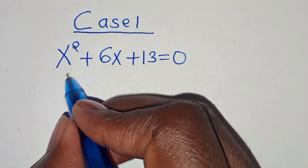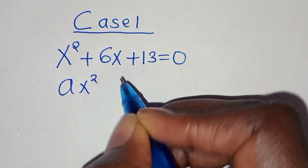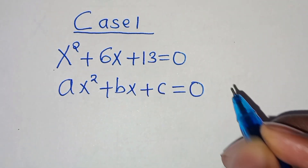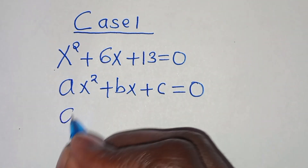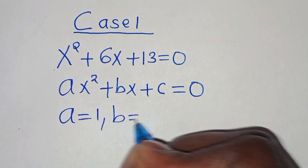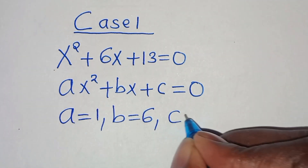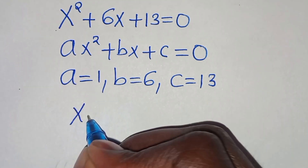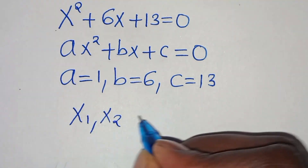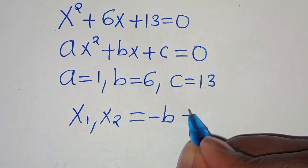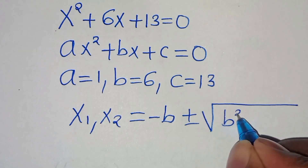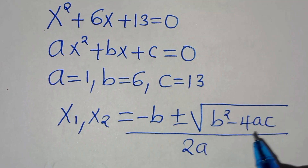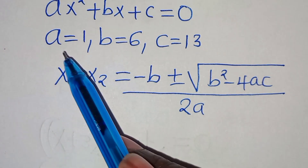This is a quadratic equation of the form ax squared plus bx plus c equals 0. From this quadratic equation, we have a equals 1, b equals 6, and c equals 13. We can solve for x1 and x2 by applying the quadratic formula: minus b plus or minus the square root of b squared minus 4ac, divided by 2a.